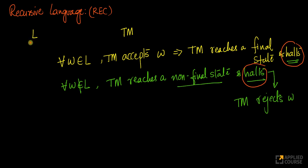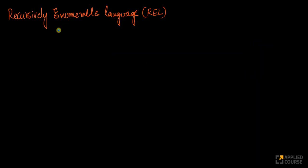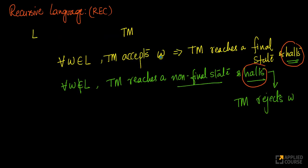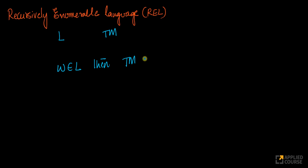Now let's look at recursively enumerable languages and see how they differ. For a recursively enumerable language L, if a word belongs to the language, the Turing machine reaches a final state on reading W — it reaches a final state and halts, which means it accepts.